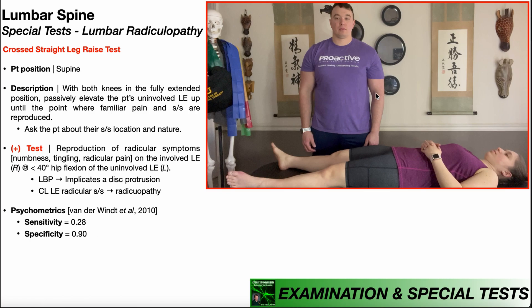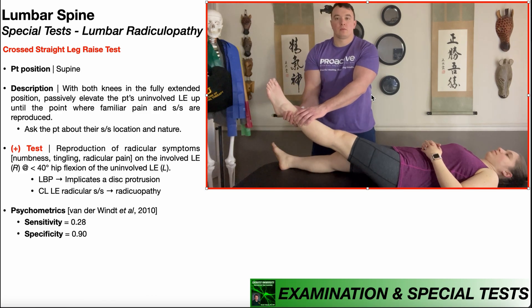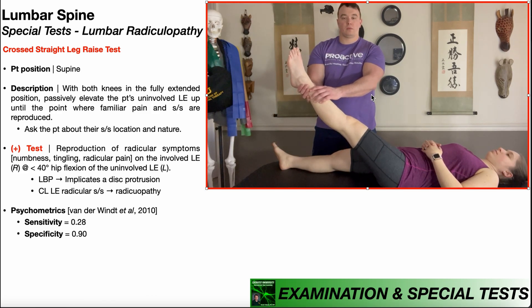Let's take a look at this test one more time. The patient will be positioned in supine, and we're essentially going to perform a straight leg raise test on the uninvolved side. We first need to know which side is affected — we're supposing here that the right side is affected, so we're going to be doing it on the left side, the uninvolved side. We'll elevate that patient's uninvolved lower extremity up until the point where they report familiar pain and/or radicular symptoms. Isolated low back pain with no radicular symptoms is more along the lines of a disc protrusion, but if they do get radicular symptoms into the contralateral or involved lower extremity, that implicates a lumbar radiculopathy.